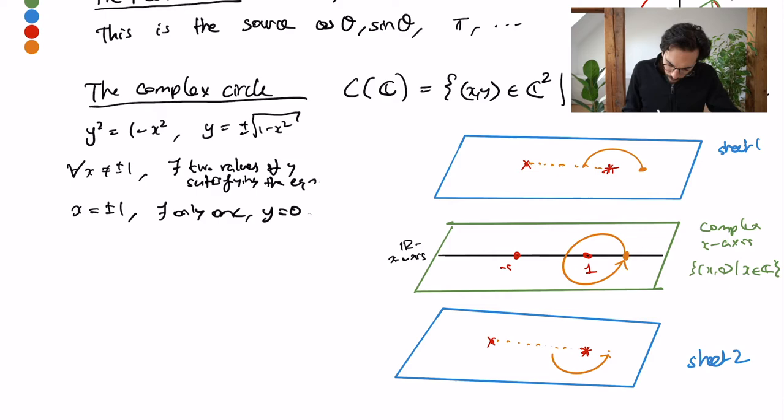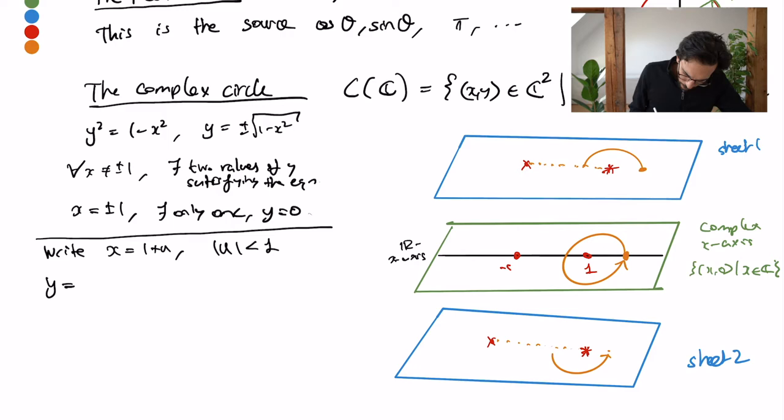And that I should whenever I cross this line I switch a sheet. So let's explain why it should be so. For example, write x equals 1 plus u with u being small. So smaller than 1 will be enough. u is a complex number. For example I'm trying to parameterize the orange loop. Then y will be the square root of u times minus 2 minus u squared, expanding out 1 minus x squared.